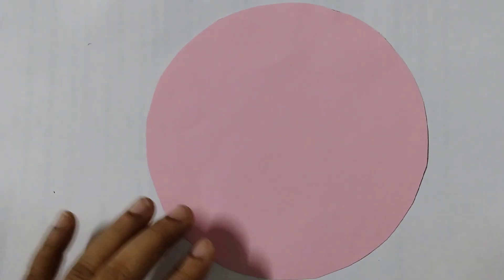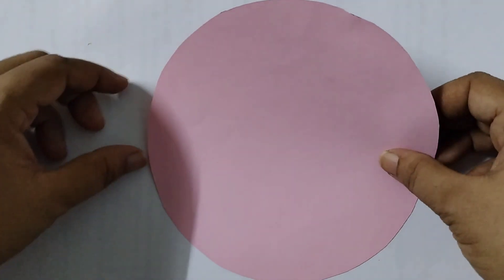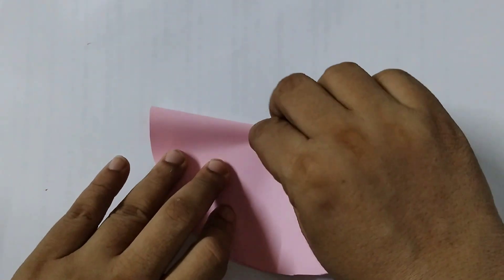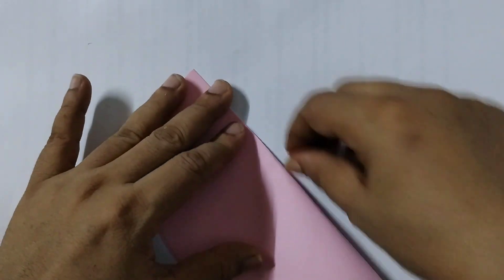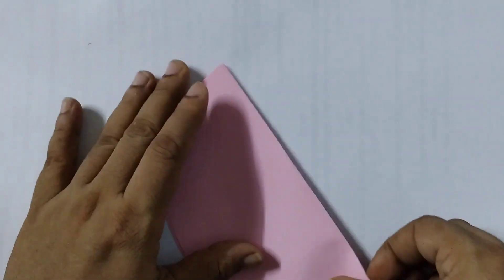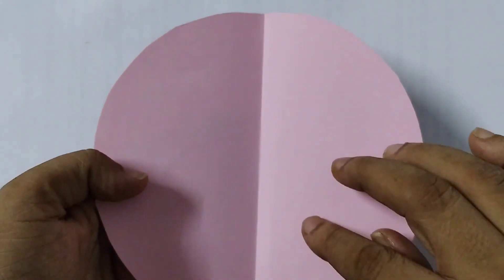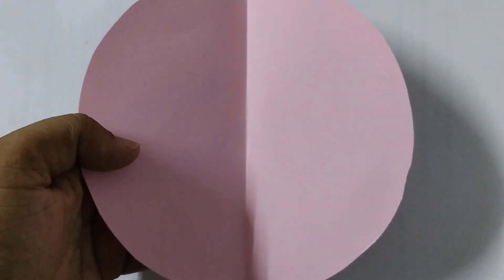We need to fold the circle to get two equal halves and cut it through the crease to get a semicircle. So fold it like this and you will get a crease here. This is the crease. Give a cut along the crease and we will get two semicircles.